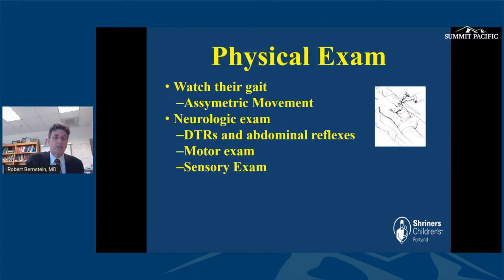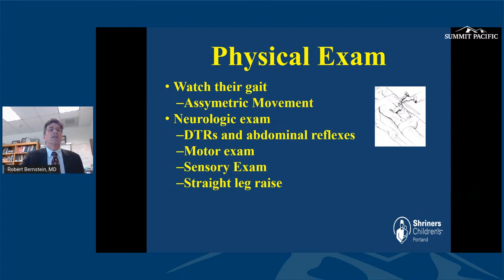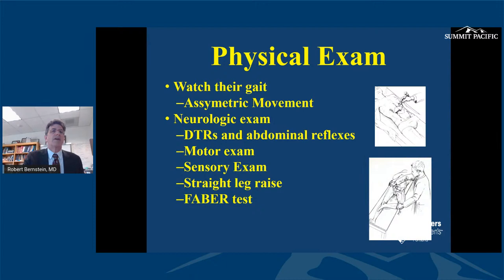We do a sensory examination to check for normal sensation. A straight leg raise — having the child lie supine — with significant radiation of pain down the leg would indicate disc herniation or similar pathology. A FABER test — flexion, abduction, and external rotation — where you place a hand on the opposite iliac crest and abduct and externally rotate the ipsilateral leg, provides good stress to the sacroiliac joint.